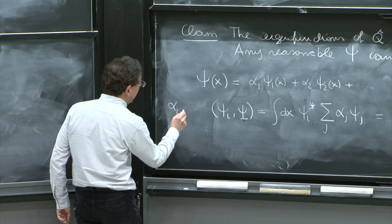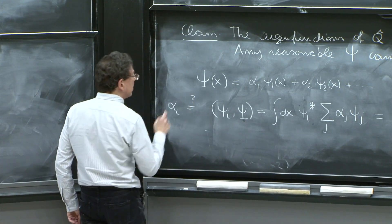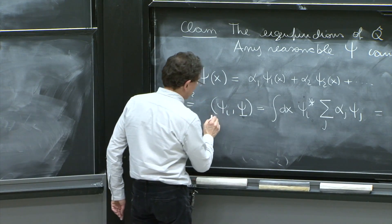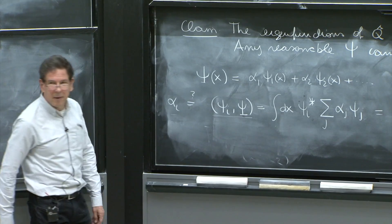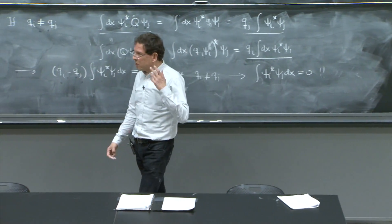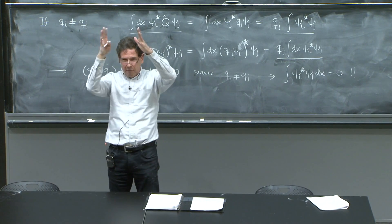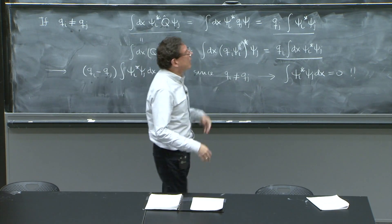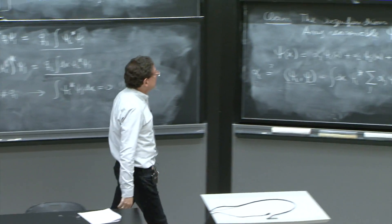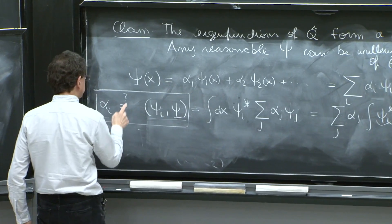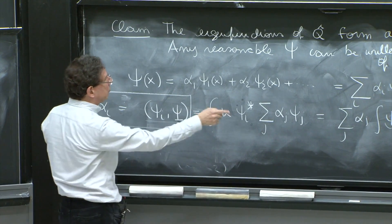And in fact, alpha i is equal to this integral of psi i with psi. So how do you compute an alpha i? You must do an integral of what? Of psi i star times your wave function. So it is computable. So the alpha i's are given by these numbers, as we proved there.